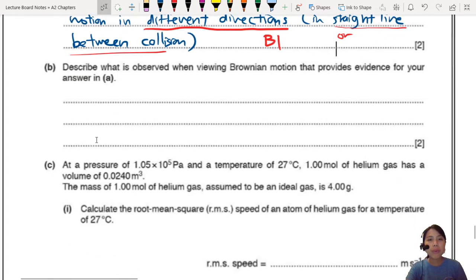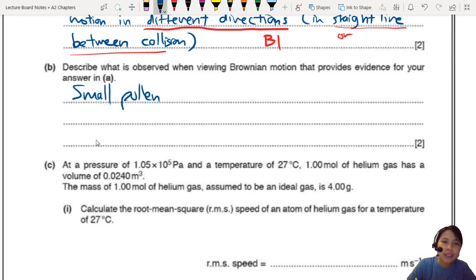Now B, describe what is observed when viewing Brownian motion that provides evidence for your answer. Now this one is pretty interesting. In real life, we actually... It's very hard for us to see gas molecules. Like, oh man, we can't... Our microscopes can't zoom in that small to molecules. But we can view bigger things. Such as small pollen grains or maybe even dust particles. So small pollen grains, dust particles or smoke particles also can.